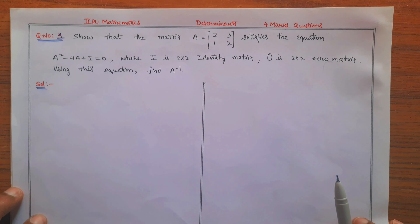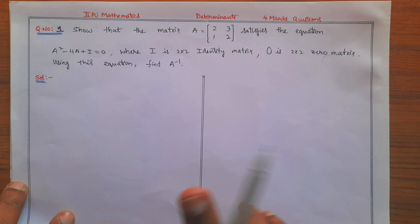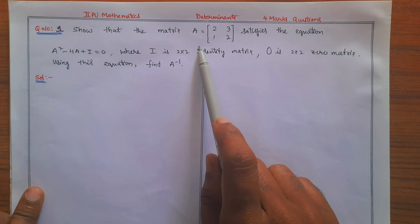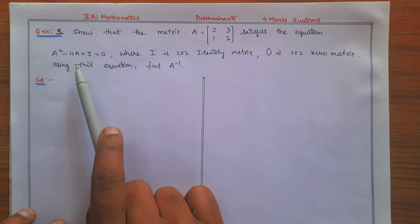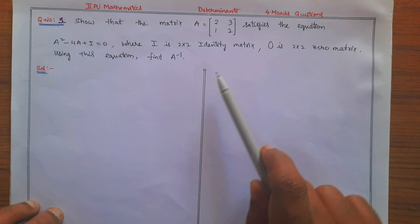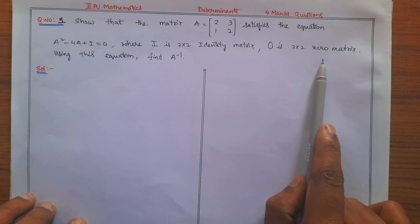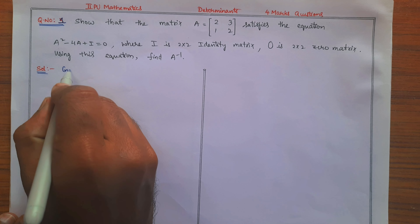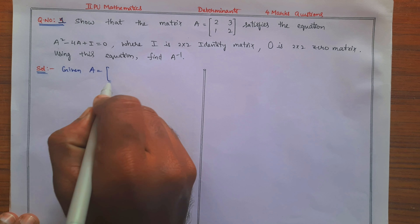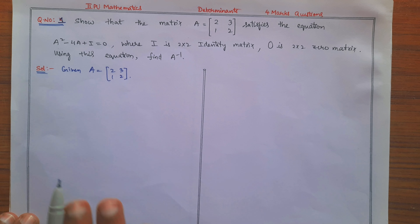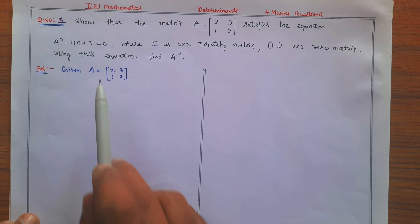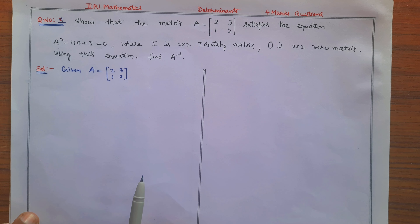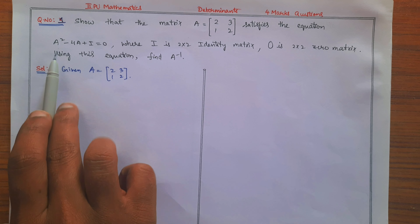Now, question number 1. Prepare this one question well — it will come in the exam. The question is: show that the matrix A equal to [2, 3; 1, 2] satisfies the equation A² minus 4A plus I equal to 0, where I is the 2×2 identity matrix and 0 is the 2×2 zero matrix. Using this equation, find A inverse. Given: A = [2, 3; 1, 2]. Now consider the 4-mark question — first prove the equation, then find A inverse.